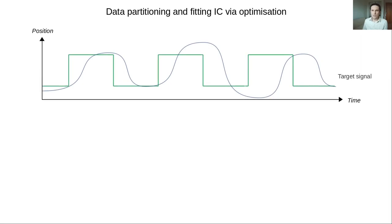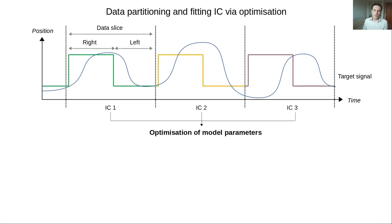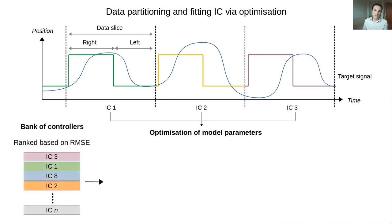Our methodology started by looking at the recorded data and the target signal to create data slices, which were formed by two consecutive trials each. Individual intermittent controllers were obtained for each slice by optimizing the model parameters that were described earlier. This allowed the creation of banks of controllers for all participants and conditions.